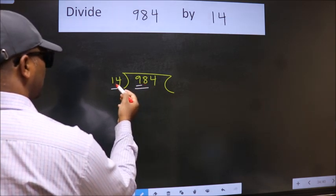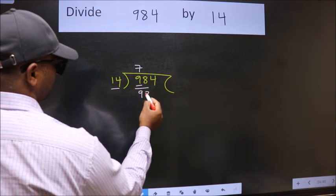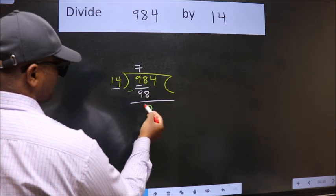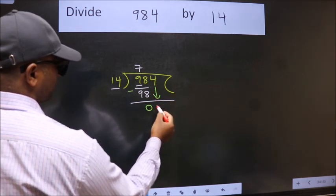When do we get 98 in 14 table? 14 sevens, 98. Now we should subtract. We get 0. After this, bring down the beside number. So 4 down.